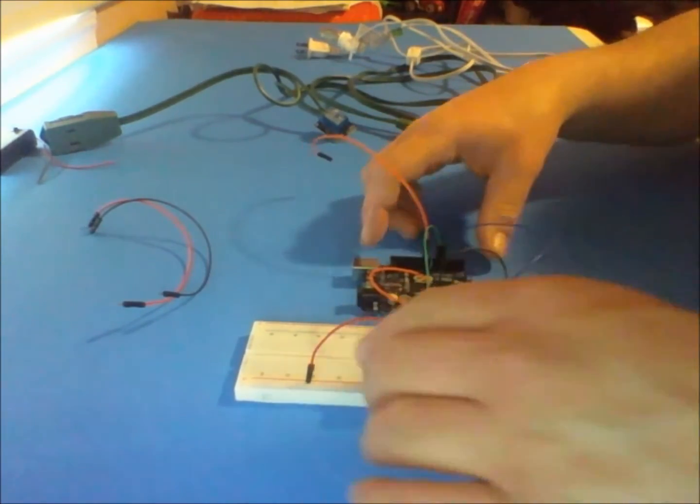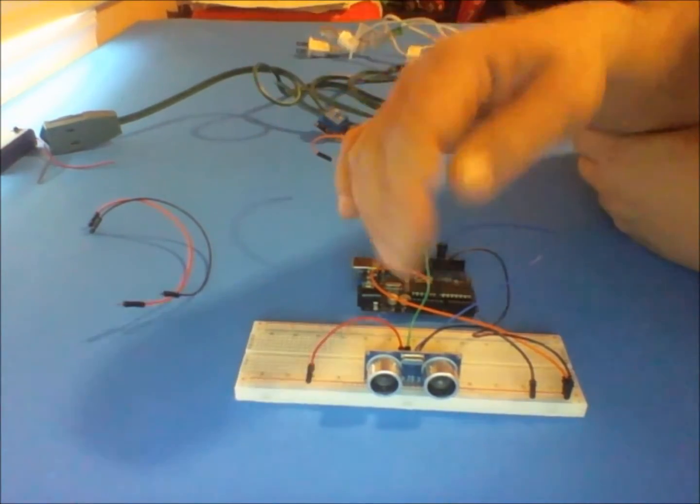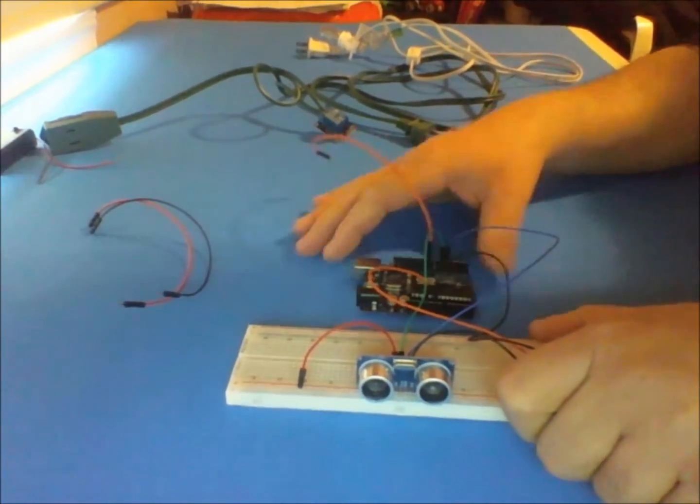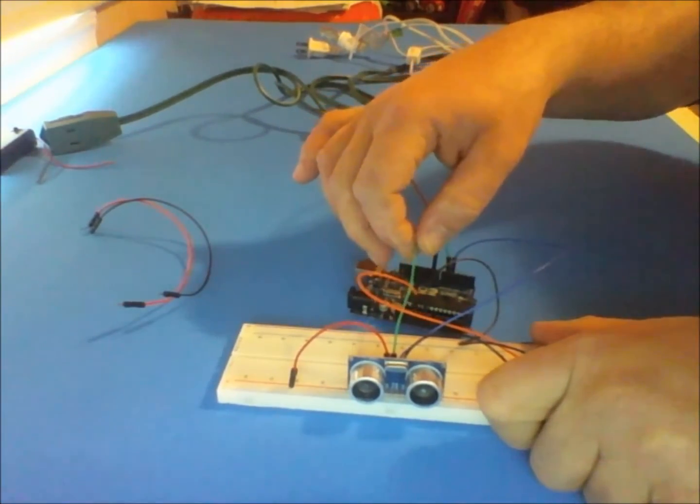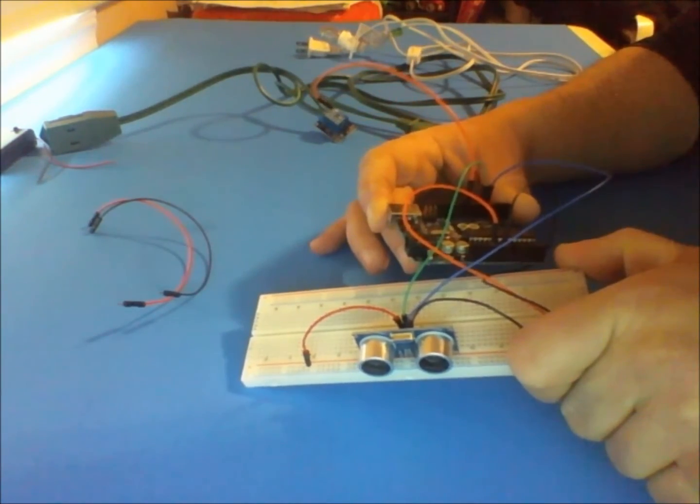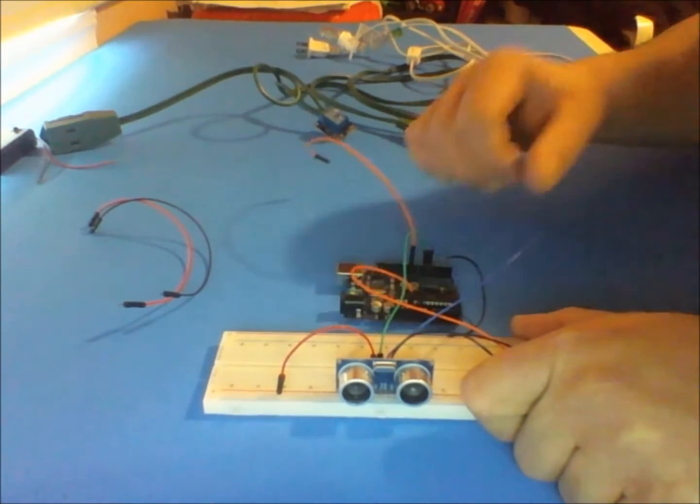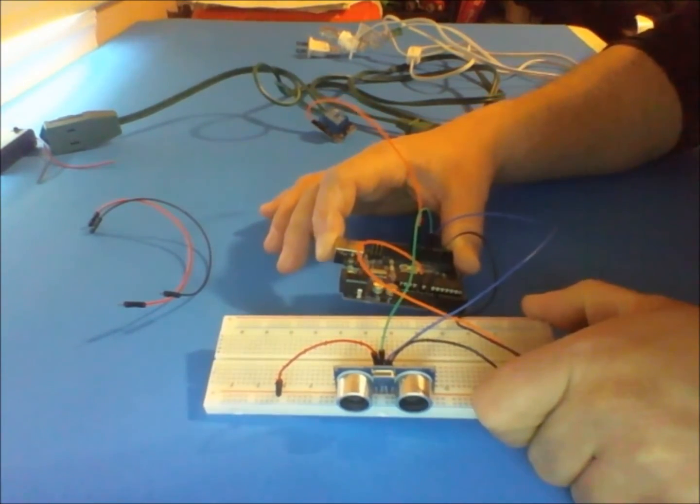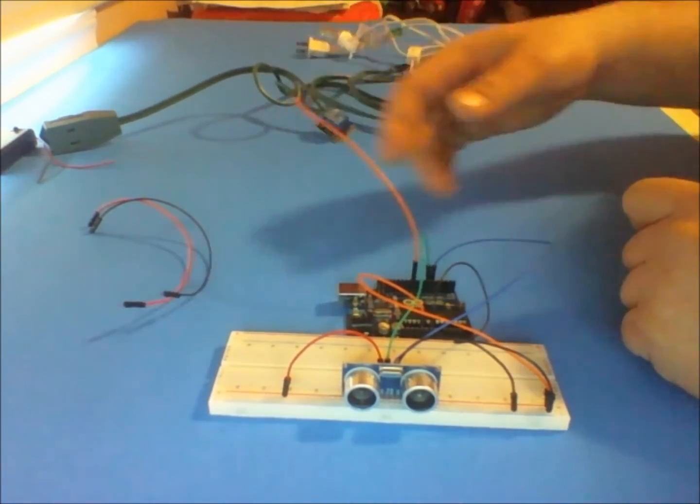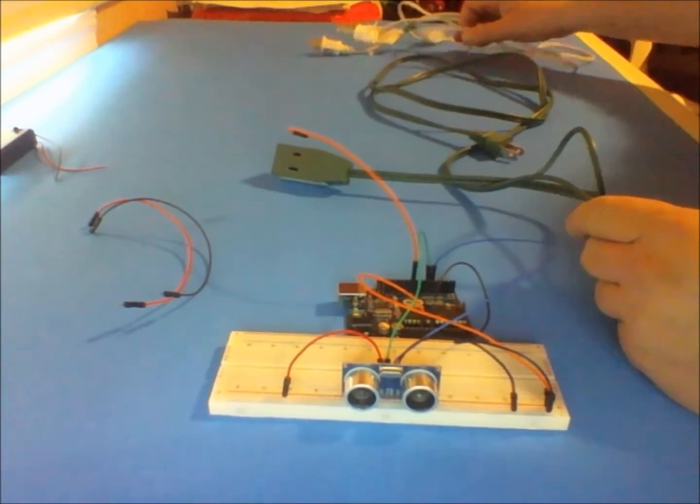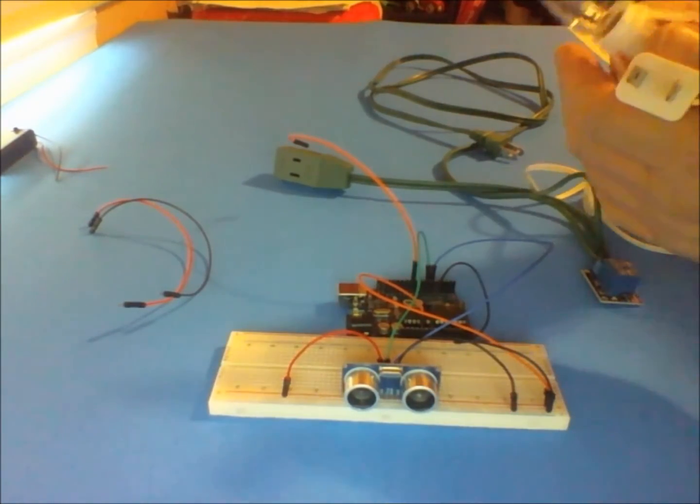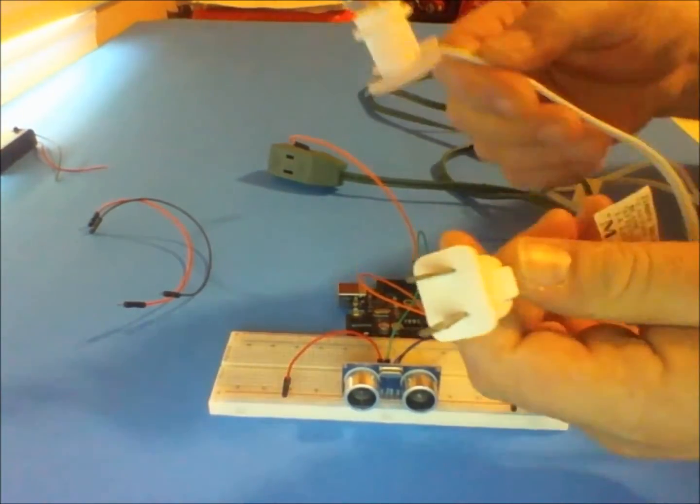For the connections: 5 volts goes to 5 volts on the Arduino, ground to ground. I connected the trigger, which is the green wire, on pin number 6 on the Arduino, and the echo which is the blue one is going to pin number 5. I reserve this orange one here for our relay because I'm going to be using a light bulb instead of an LED.